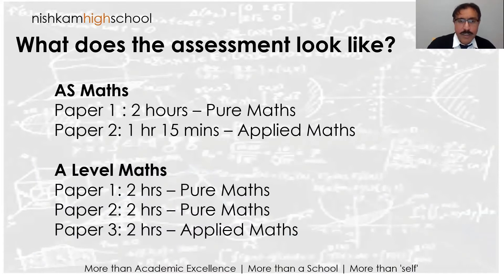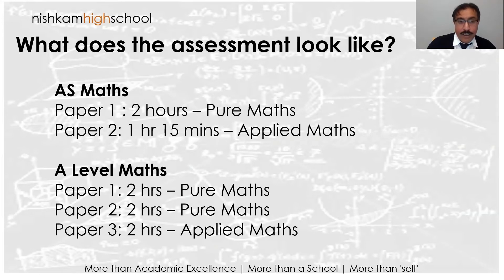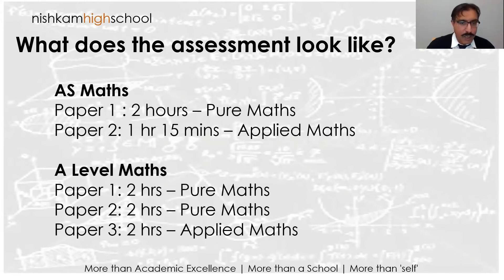So what does the assessment look like? The AS is made up of two papers at the end of the course — a pure paper and an hour-and-a-quarter paper on applied maths. At the end of Year 13, you'll sit the actual A-Level maths exam, made up of three two-hour papers: two pure and one applied maths.